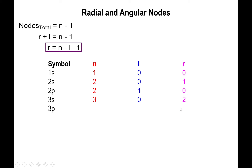For the 3p orbital, n = 3 and l = 1, so 3 - 1 - 1 = 1 radial node. This means the 3p orbital contains one angular node and one radial node. For the 3d orbital, l = 2, so 3 - 2 - 1 = 0 radial nodes. Across all three third-level orbitals there are always two total nodes: the 3s has all radial, the 3d has all angular, and the 3p has one of each.